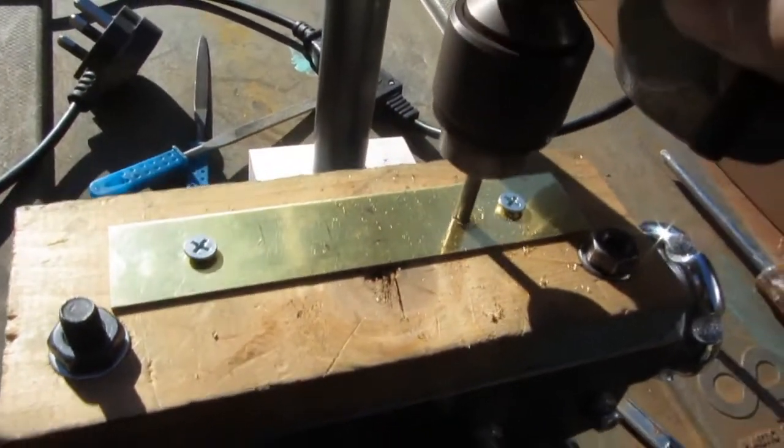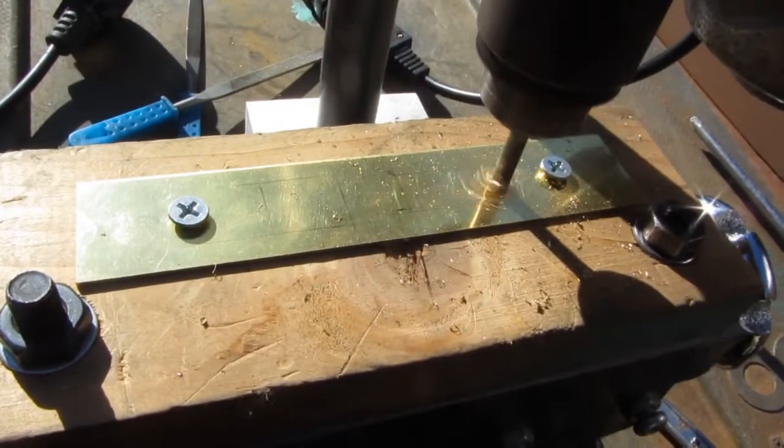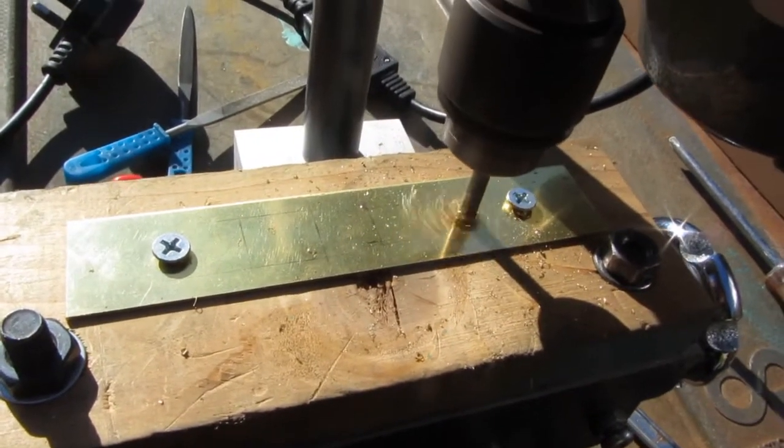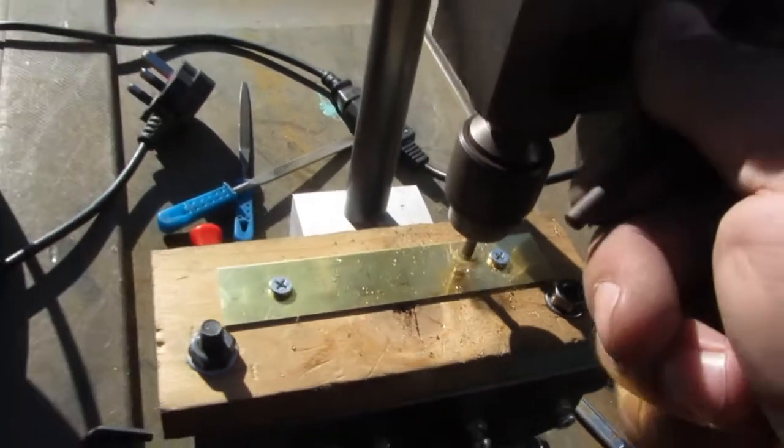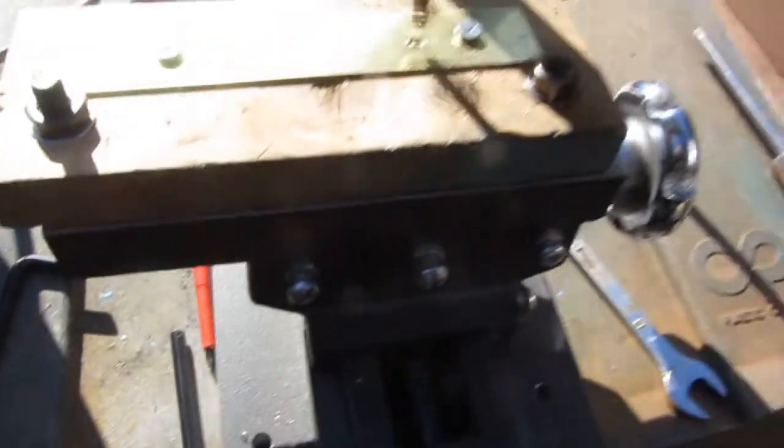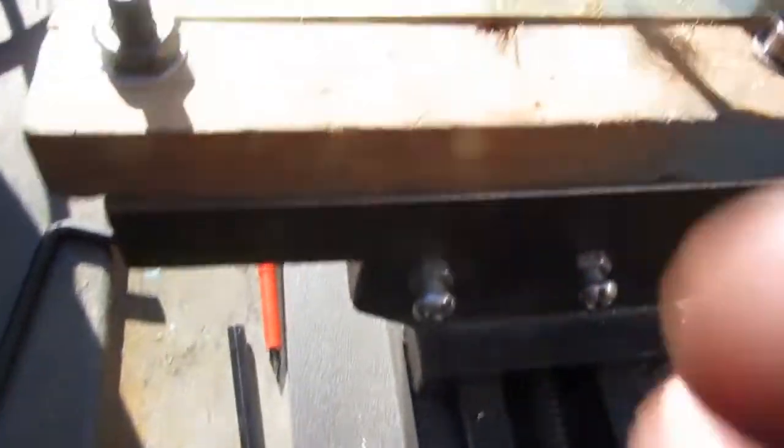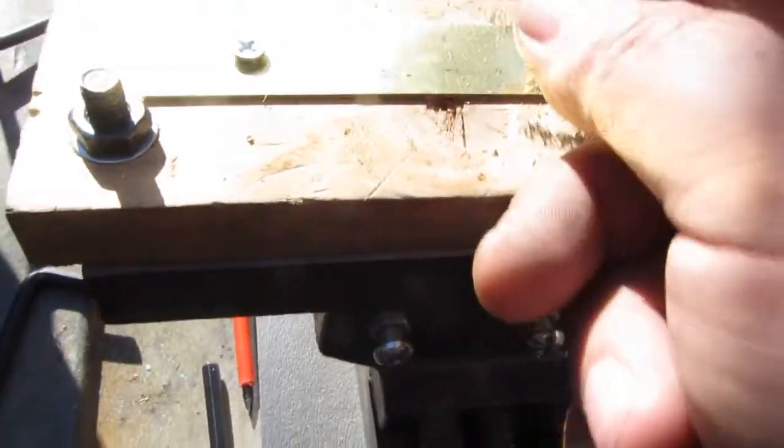Basically it drills the hole first and then afterwards we mill it along. Once it goes through then we bring it round. Just clear this swarf.